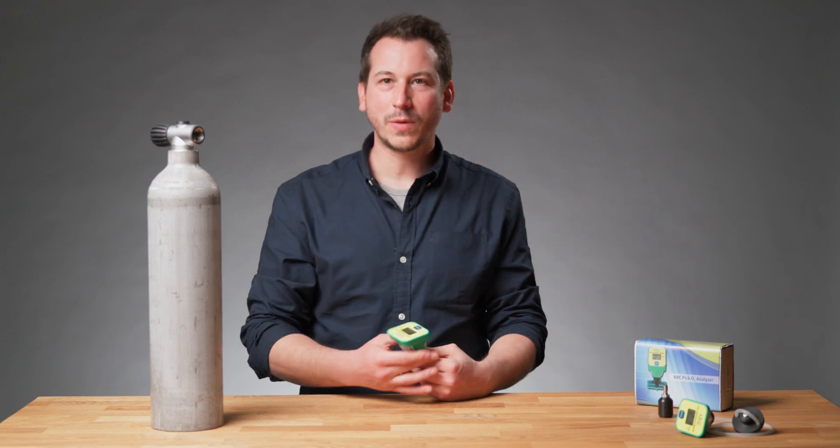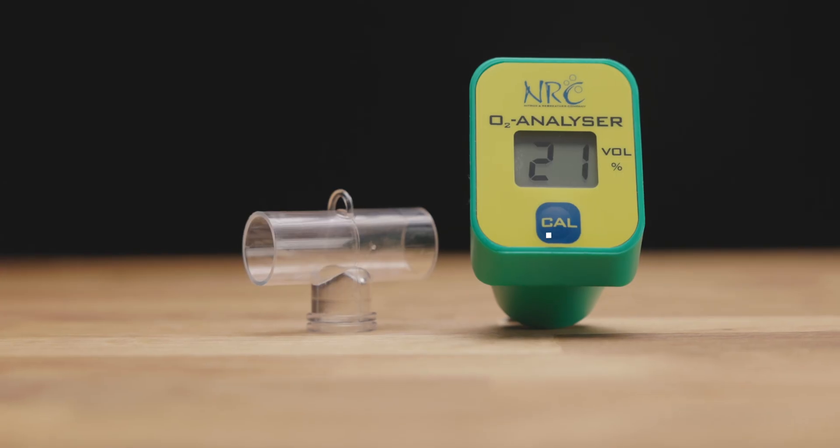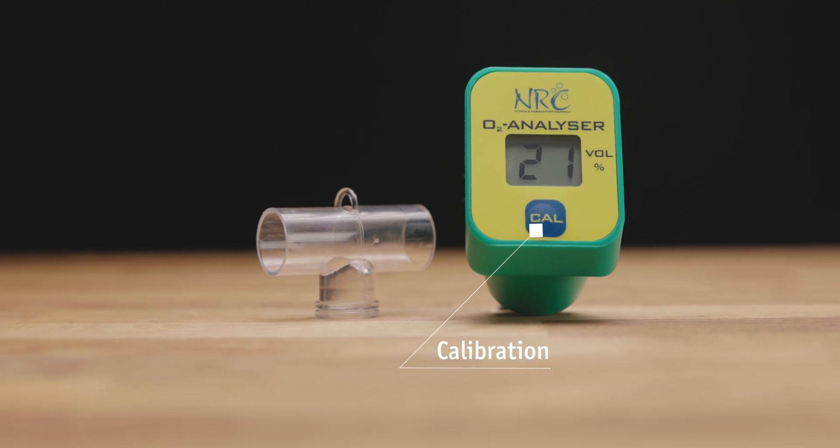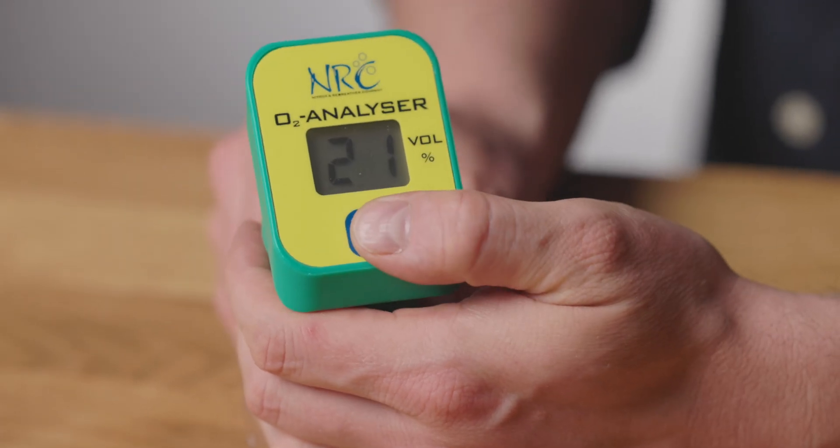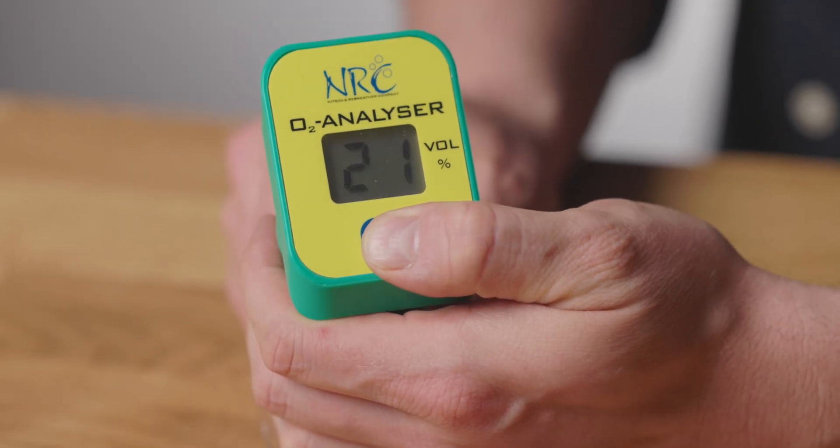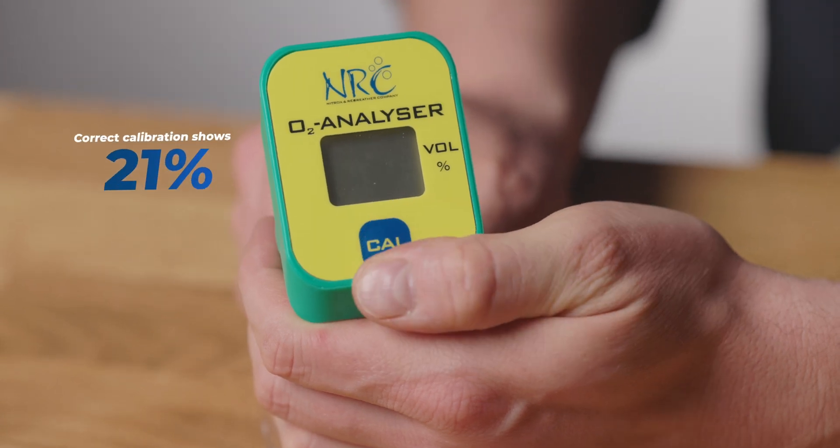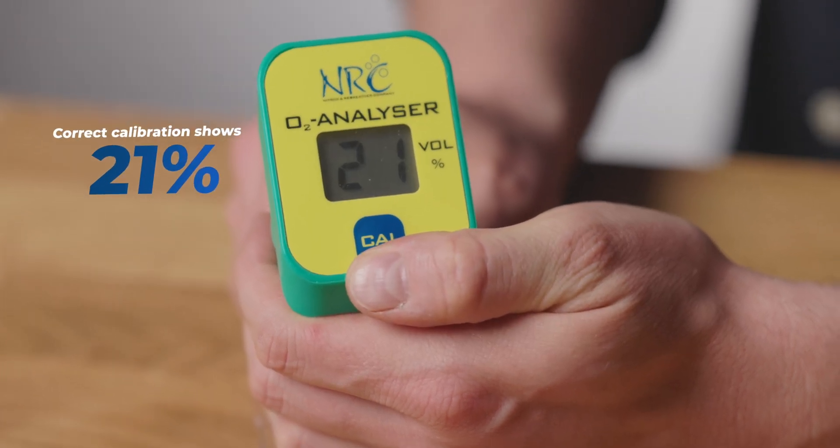First of all, we need to do the calibration of the analyzer. For this we have the calibration button in front of the display. This one we hold for a couple of seconds until the cull is showing up on the display. And after he shows us the 21% volume.